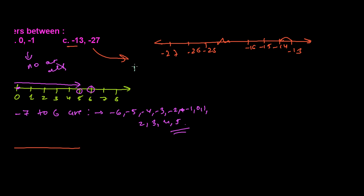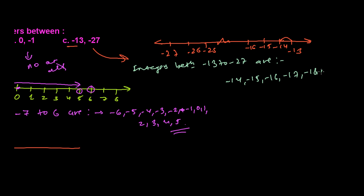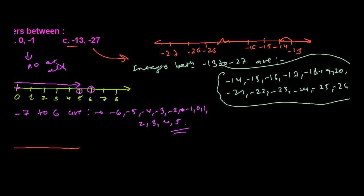Integers between minus 13 to minus 27 are: minus 14, minus 15, minus 16, minus 17, minus 18, minus 19, minus 20, minus 21, minus 22, minus 23, minus 24, minus 25, and minus 26. These are the integers between minus 13 and minus 27.